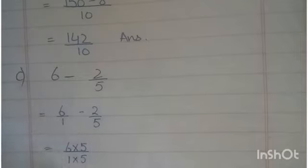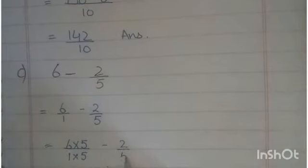So 6 by 1 you write, minus 2 by 5. Now, unlike fractions. We multiply by 5 to make same denominators. So you write 30 by 5 minus 2 by 5.